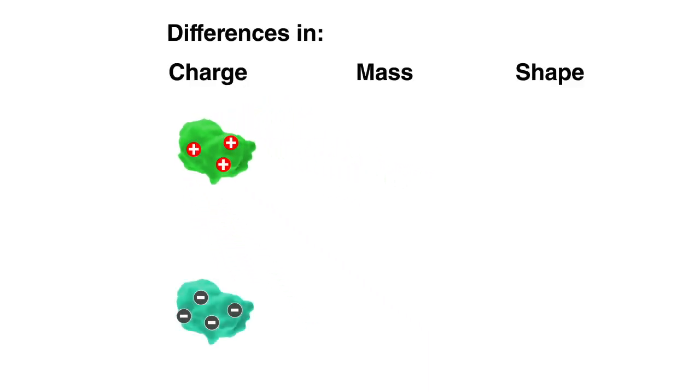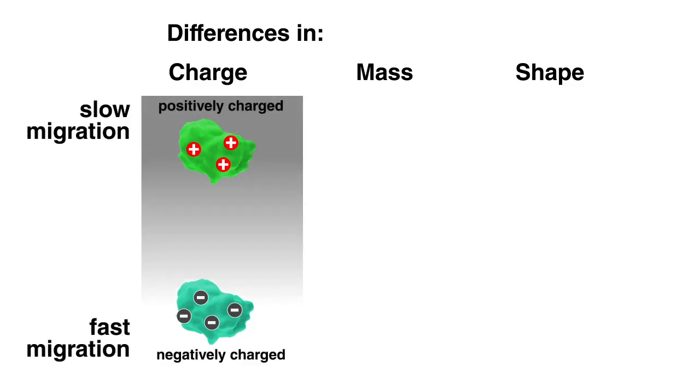A protein's overall electric charge is determined by the charge of its individual amino acids and the charge of any additional chemical modification. The more negatively charged the protein is, the faster the protein will migrate through the gel matrix towards the positive electrode.